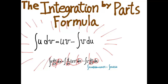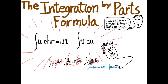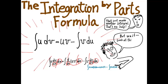A skeptic might be disappointed, saying it's not helpful because you're taking an integral and rewriting it in terms of another integral. However, in our specific example, we've taken an integral that was hard — x·cos x — and turned it into an integral that was easy — sin x. That's how integration by parts works: it turns a difficult integral into a more manageable one.